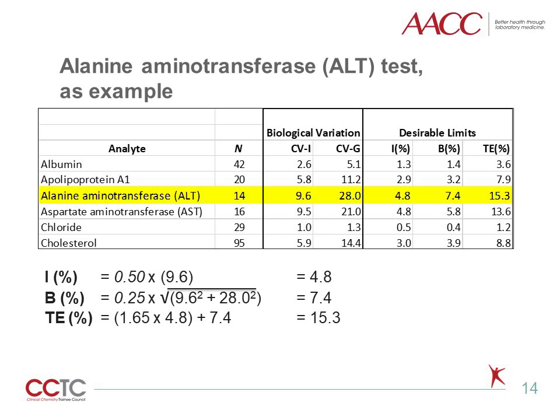Expressing these limits and biological variation data in percent CV terms is helpful because they apply equally to any unit of measure, whether conventional U.S. units or international units. When needed, these percentage values can be back-converted to a specific unit of measure for the test analyte through simple mathematical calculations.